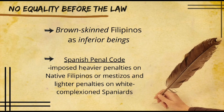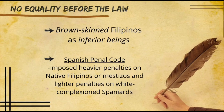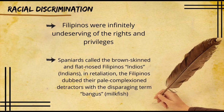Second, no equality before the law — Spaniards arrogantly regarded the brown-skinned Filipinos as inferior beings. Laws enforced in the Philippines imposed heavier penalties on native Filipinos or mestizos and lighter penalties on white-complexioned Spaniards. As we can observe, there was inequality in enforcing the law between Filipino and Spanish people. Third, racial discrimination — Filipinos were treated as inferior beings undeserving of the rights and privileges that white Spaniards enjoyed.